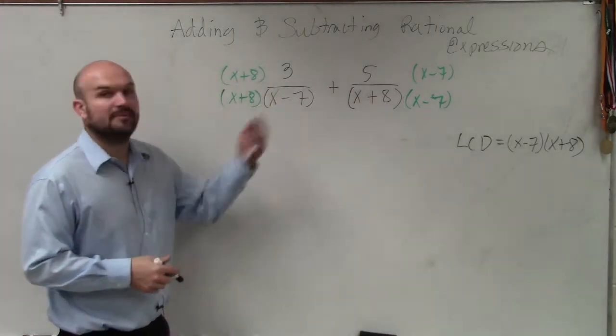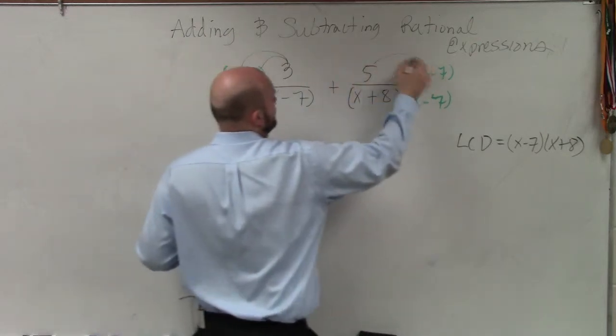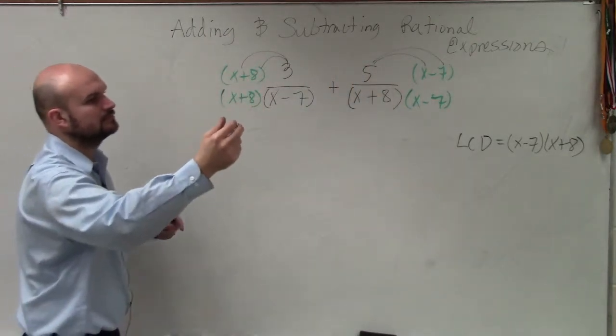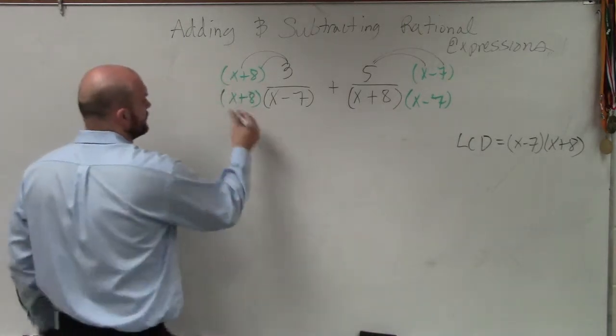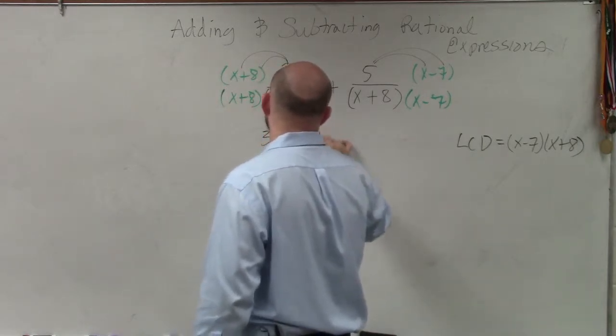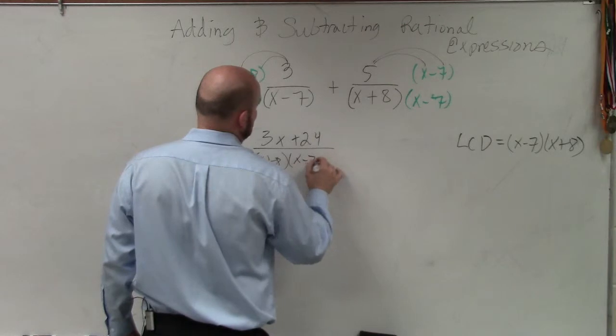Well, now, to simplify, we apply a distributed property. So 3 times x is 3x, 3 times 8 is a positive 24, all over x plus 8 times x minus 7.